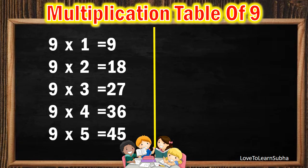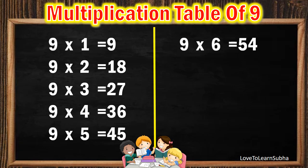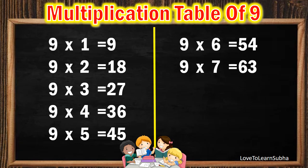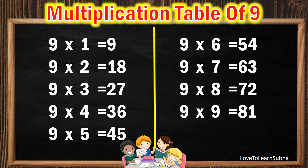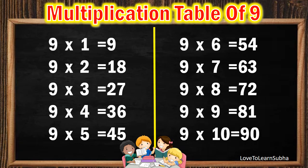9 5's are 45. 9 6's are 54. 9 7's are 63. 9 8's are 72. 9 9's are 81. 9 10's are 90.